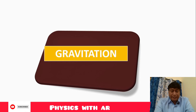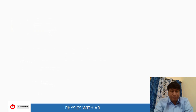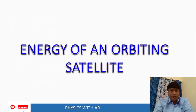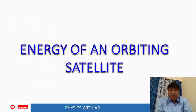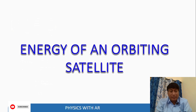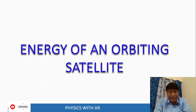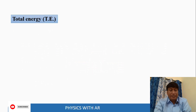Welcome to Physics with Air. In this class we are going to discuss the chapter gravitation. The concept is energy of an orbiting satellite. When a satellite revolves around the earth, the total energy is nothing but the sum of kinetic energy plus potential energy.